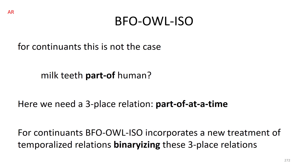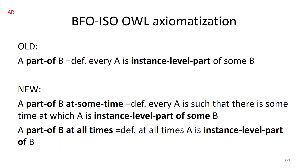To solve this, Alan invented a procedure for binarizing three-place relations. In the old version we would say 'A part of B' means every A is an instance-level part of some B. In the new version we have two relations: 'part of at some time' and 'part of at all times.' To say A is part of B at some time means every A is such that there is some time at which A is an instance-level part of some B, and similarly for part of at all times.